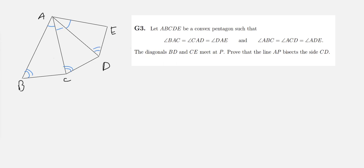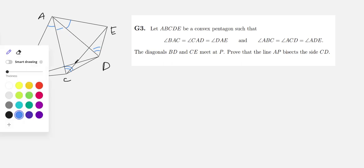Now it says that the diagonals BD and CE, which I'll draw in now, BD and CE, they meet at a point that is P.